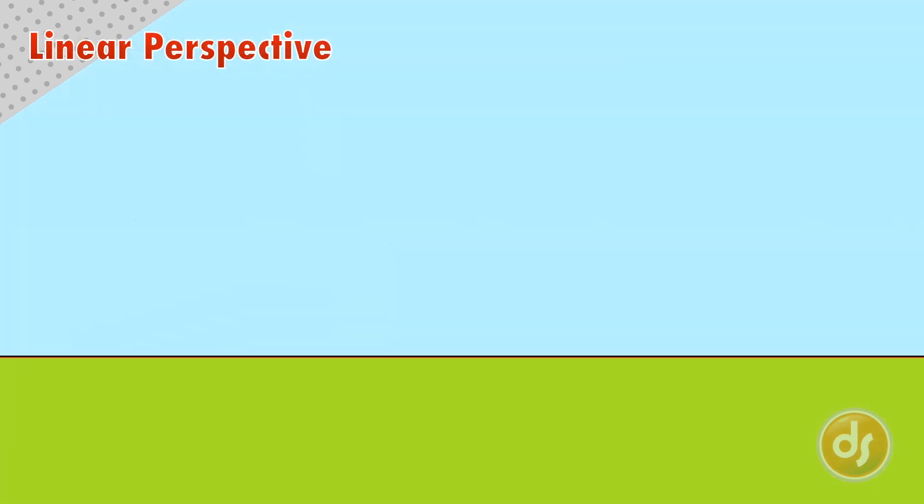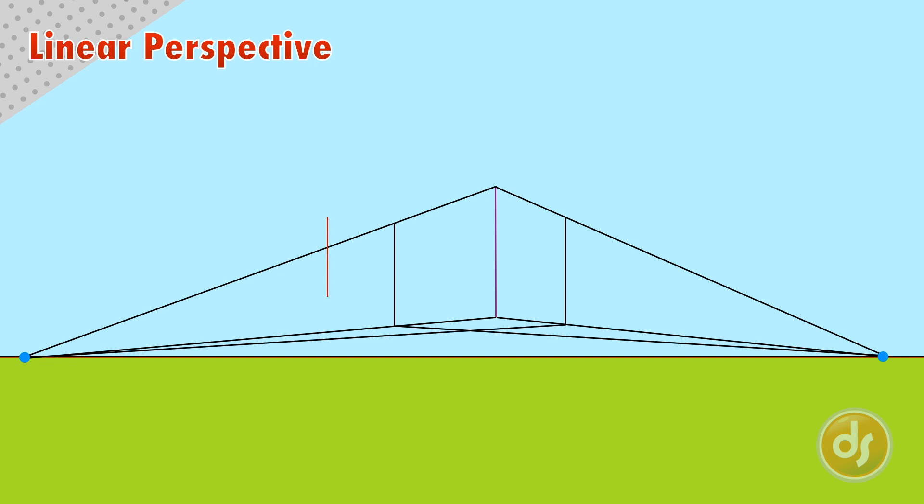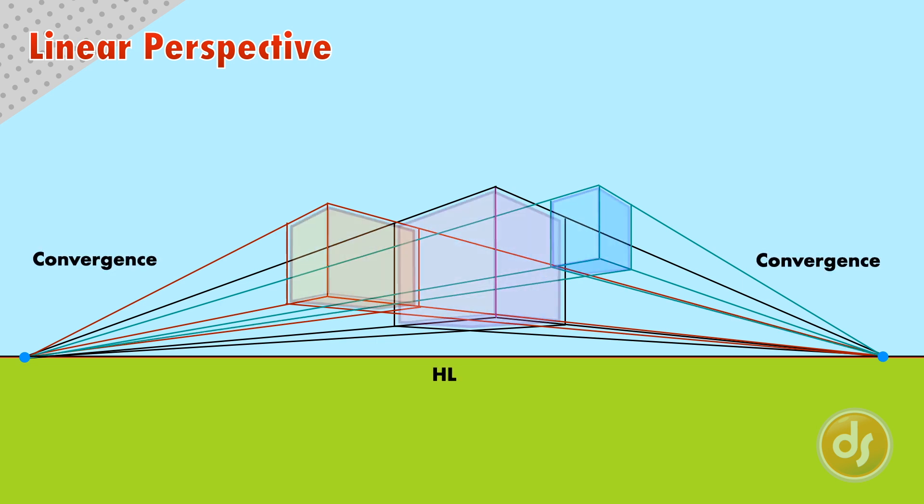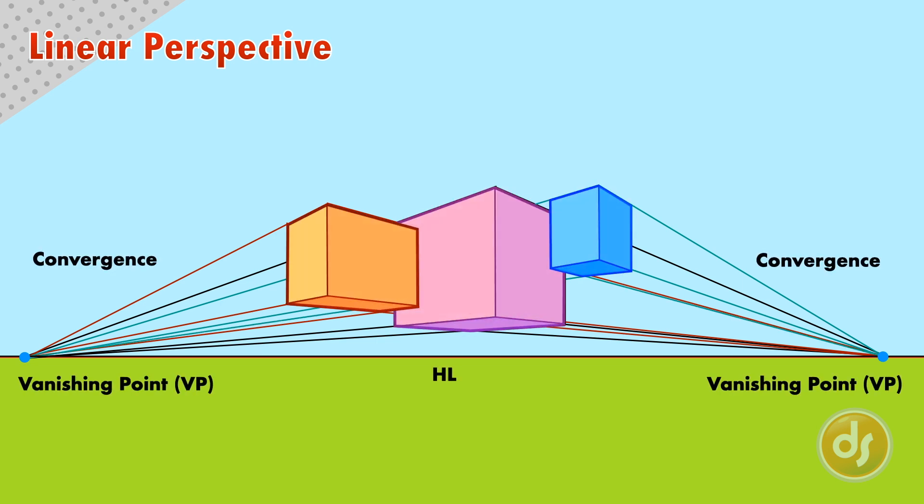Now that we understand the framework of what the viewer is seeing, let's create objects in linear perspective. Like the principle of convergence states, objects must have lines that converge to points on the horizon line. These points are called vanishing points, and we can have one, two, or three point perspective.